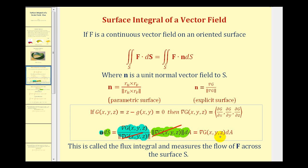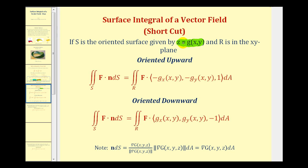And one more thing to notice before we summarize this. Notice that the partial derivative of big G with respect to z would always be one if the surface is given in this form. So we often use the following shortcuts to evaluate the surface integral of a vector field given the orientation of the surface.